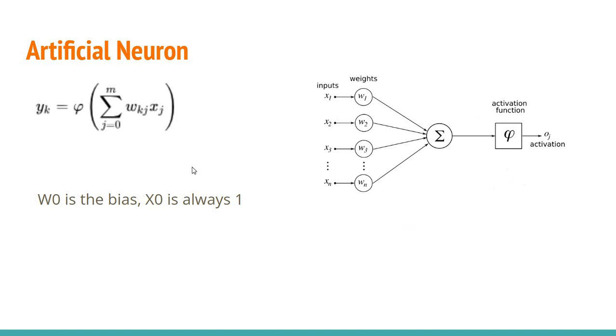So in certain equations you see here plus b, but we don't really need it because weight 0 will be treated as the bias.